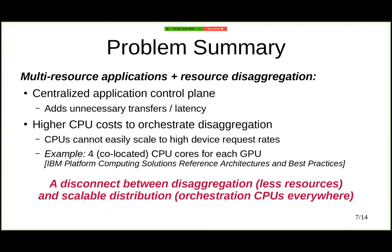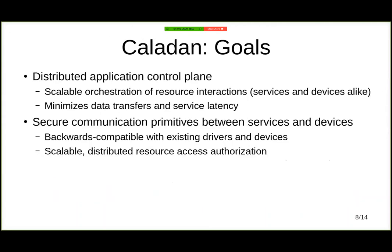The goal of Caladan is precisely to solve these two problems. We want distributed application control planes so that we can have a scalable orchestration of interaction between all the resources in the system — including both services running on CPUs and physical devices. By having this scalable orchestration, we can minimize data transfers and service latency. At the same time, we want Caladan to offer secure communication primitives between services and devices, while being backwards compatible with existing drivers and devices, and offering scalable distributed resource access authorization.